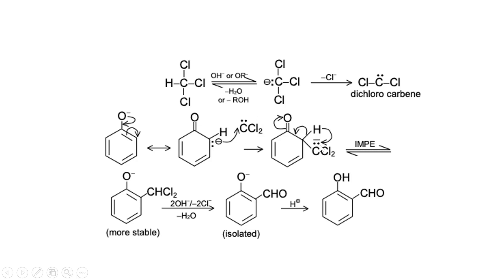The dichlorocarbene bonds with the ring carbon. A negative charge is formed, which is unstable. So the C-H bond on the adjacent carbon breaks, the double bond shifts, and H+ migrates to the carbene carbon. As a result, O- remains and a CHCl2 group is formed at the ortho position. This is a stable intermediate compound, and in the presence of base (2 OH-), the two Cl atoms are removed.